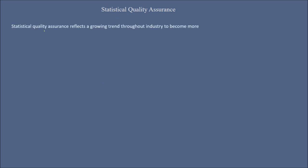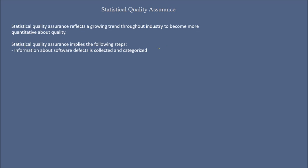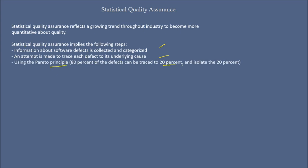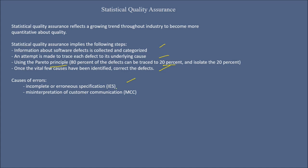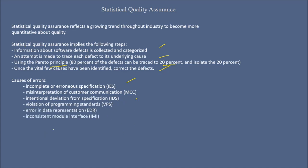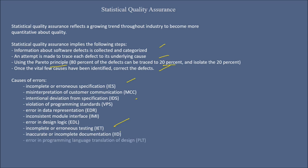Statistical quality assurance reflects a growing trend toward being more quantitative about quality. It implies collecting and categorizing information about software defects, then tracing each defect to its underlying cause using the Pareto principle — 80% of defects can be traced to 20% of causes. Once the vital few causes are identified, the defects are corrected. Causes of error can include incomplete or erroneous specification, misinterpretation of customer communication, intentional deviation from specification, violation of programming standards, errors in data representation, inconsistent module interfaces, errors in design logic, incomplete or erroneous testing, inaccurate or incomplete documentation, or erroneous programming language translation of design, and ambiguous or inconsistent human-computer interfaces.